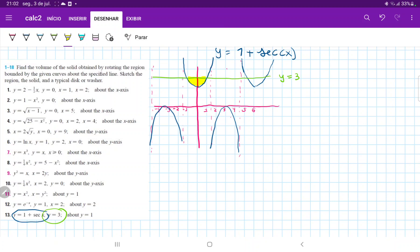So we're taking this area here, and then we're revolving it around the line y is equal to 1. So let me draw that line. This is y is equal to 1.